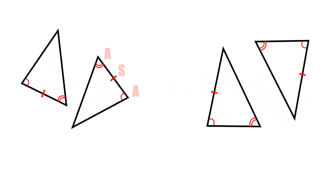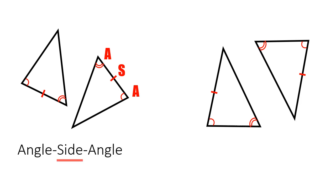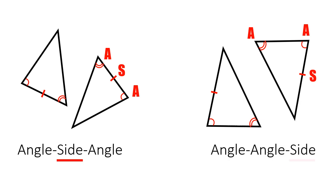With angle-side-angle, notice that the side is in between the two angles, so when we look at the triangle we can put it in that particular order. With angle-angle-side, the corresponding side we know is congruent is not the one connecting the two angles — it's one of the opposite sides. That's why we put the side at the end of the name. That is the difference between angle-side-angle and angle-angle-side.